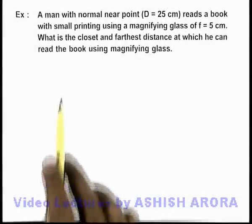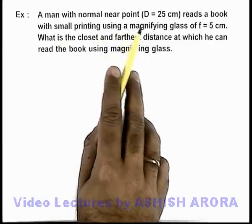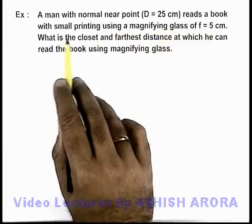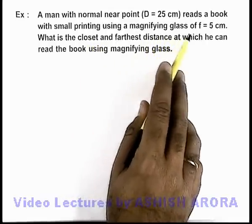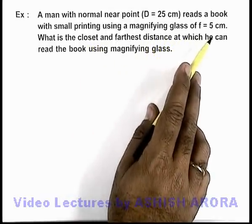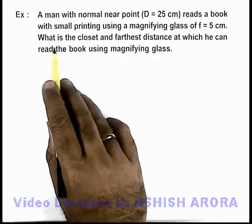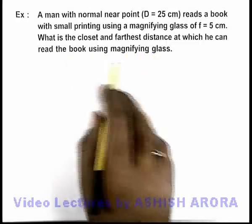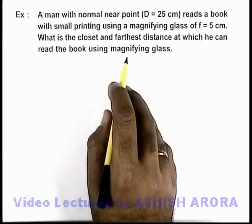In this example, we are given that a man with normal near point, that is 25 centimeters, reads a book with small printing using a magnifying glass of focal length 5 centimeters. We are required to find what is the closest and farthest distance at which he can read the book using the magnifying glass.